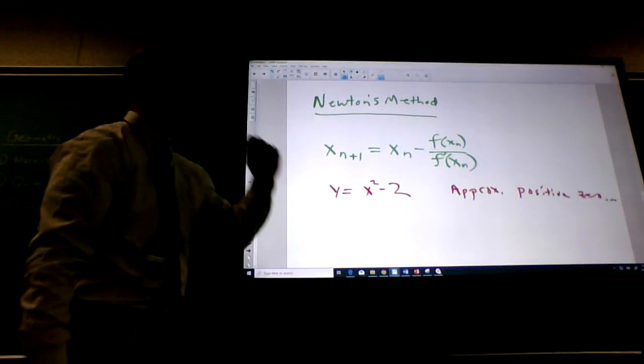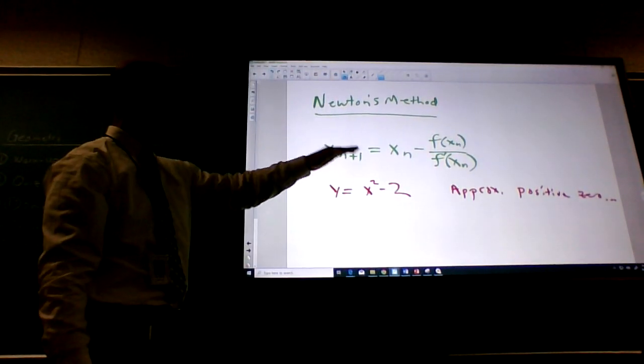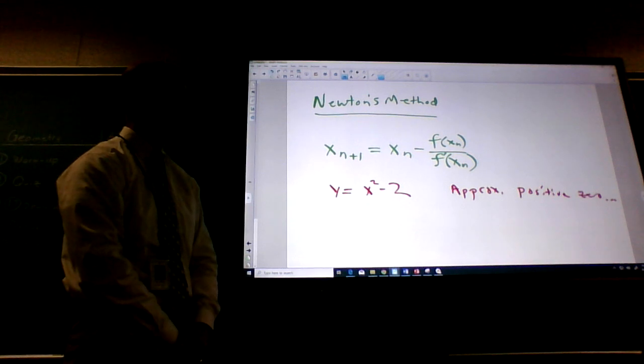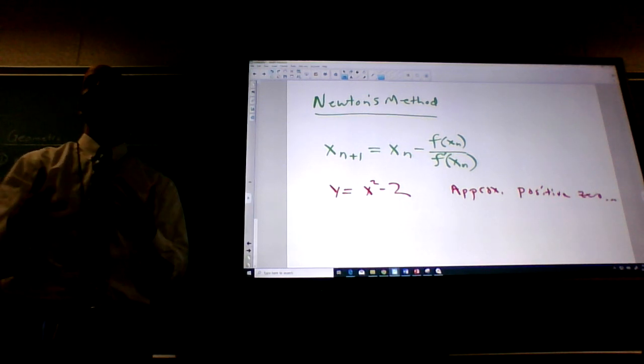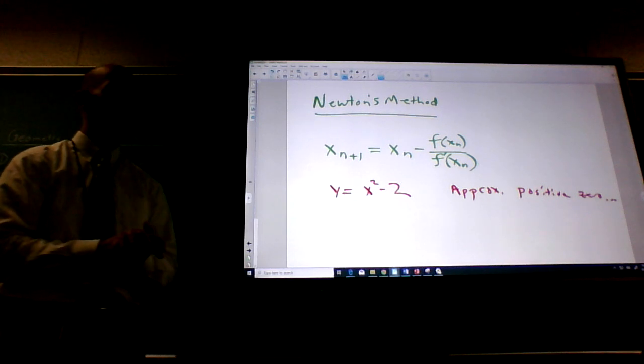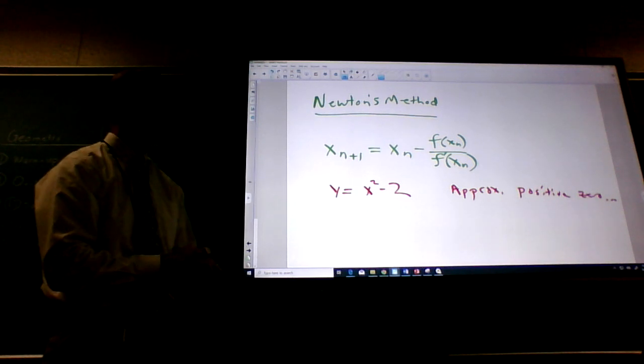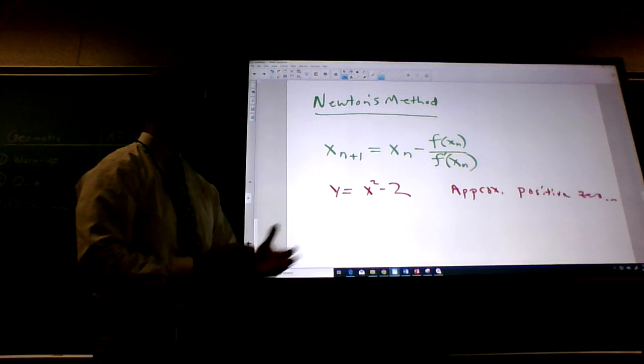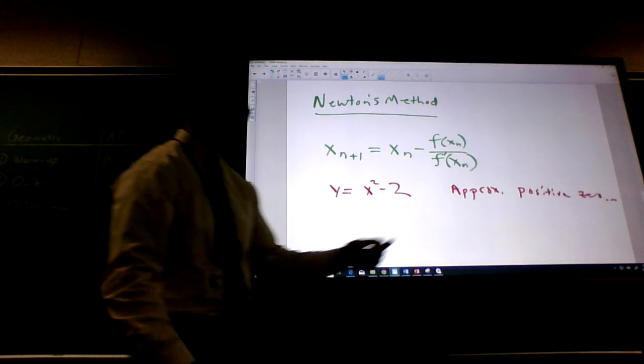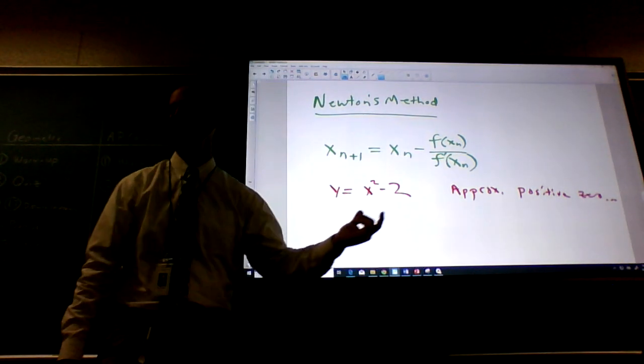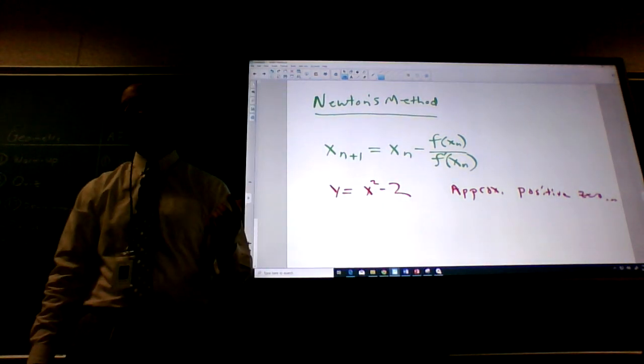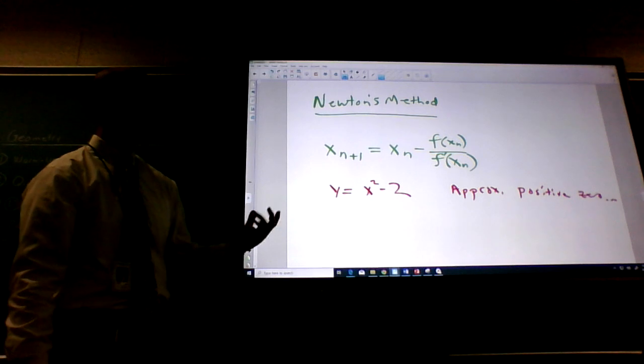All right guys, today we're looking at Newton's method, and Newton's method is given as follows. We use Newton's method to approximate zeros of functions and where they potentially intersect. So this particular problem, we've got this function y equals x squared minus 2. We're asked to approximate the positive zeros. So this one's got actually two zeros, which kind of makes sense from the fundamental theorem of algebra.